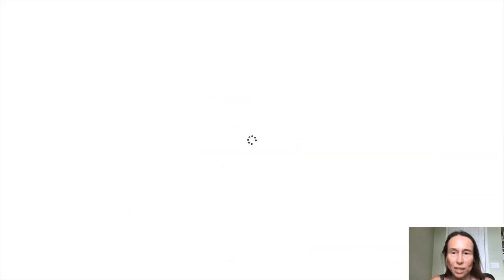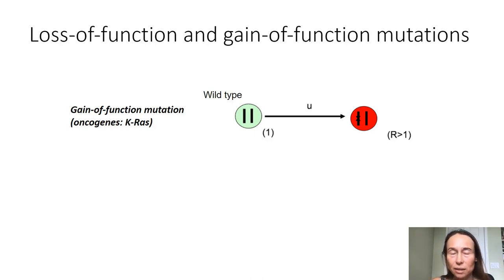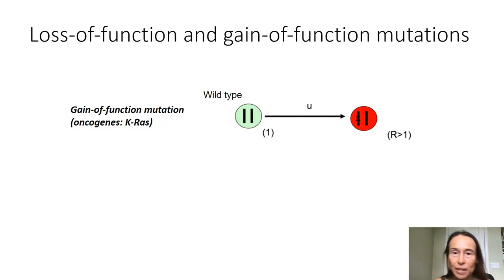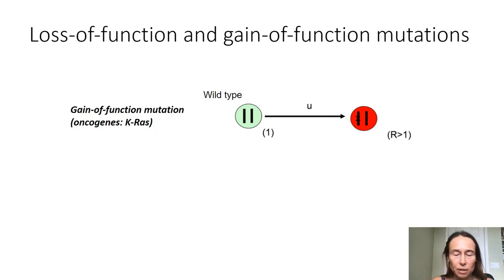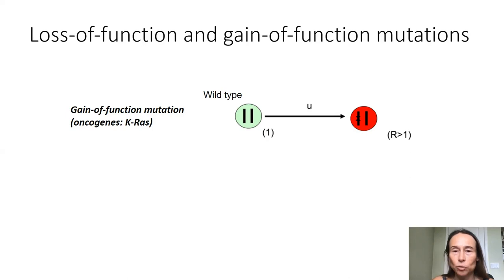A gain of function mutation is when a mutational process happens in a cell and as a result the phenotype of the cell changes and it acquires some advantage — perhaps it starts growing faster or dying slower. An example is the oncogene KRAS that's involved in colorectal carcinogenesis. It's always a one-step process: one mutation is enough to create a cell that has different properties and is somehow fitter than the rest of the population.